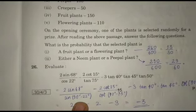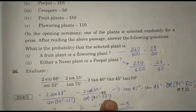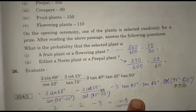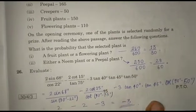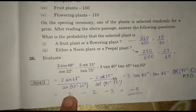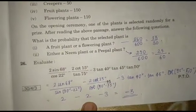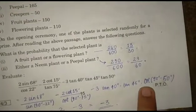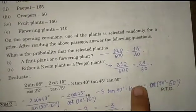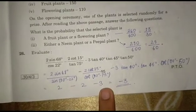cos 22° can be written as sin(90° - 22°), tan 75° as cot(90° - 75°), and tan 50° as cot(90° - 50°). We know tan 45° is 1. So we get 2 sin 68° / sin 68° which cancels to 2, minus 2 cot 15° / cot 15° which cancels, minus 3 tan 40° / cot 40° which cancels to 1, plus 1. This simplifies to -3.